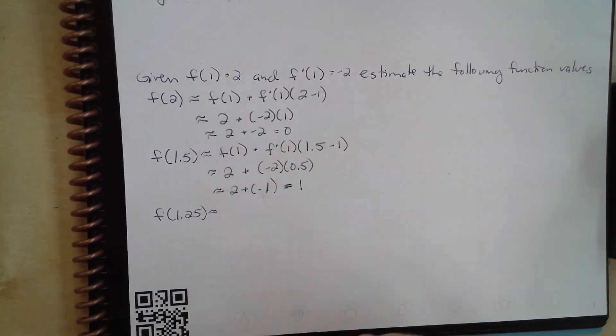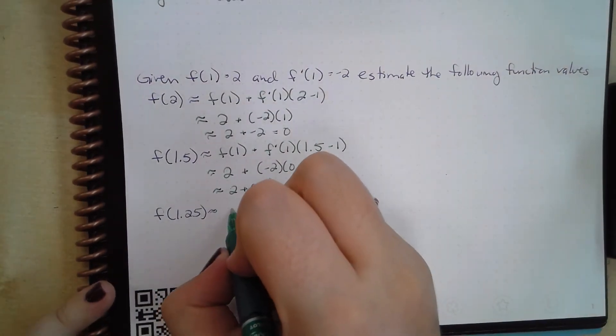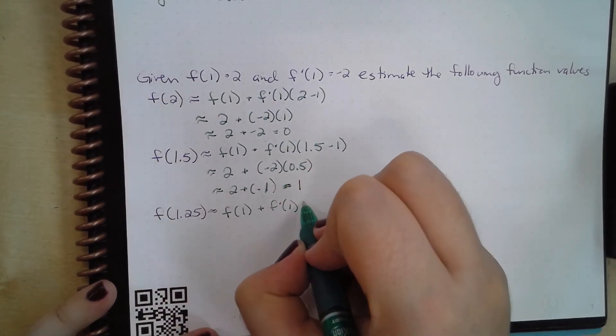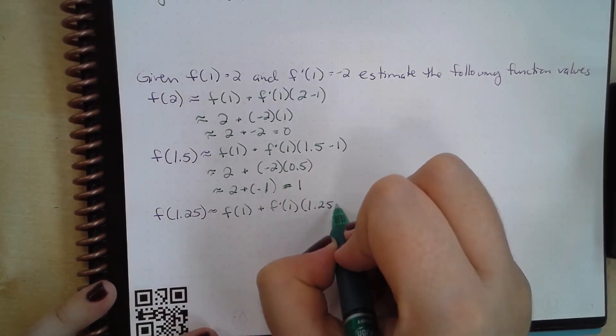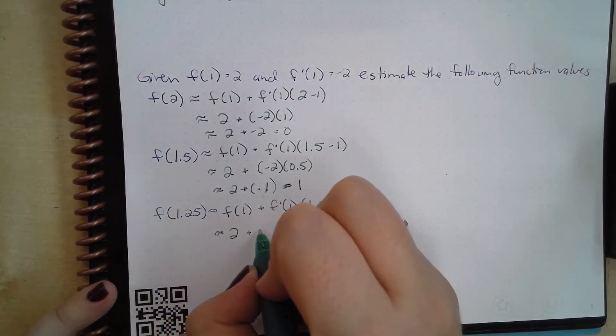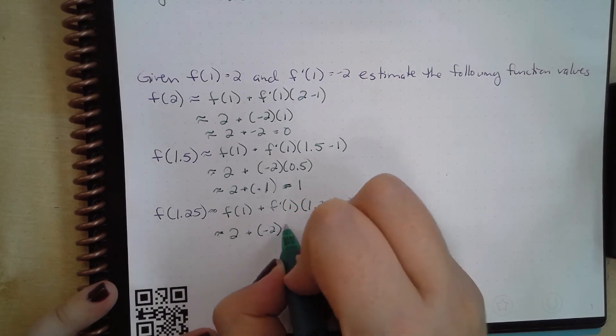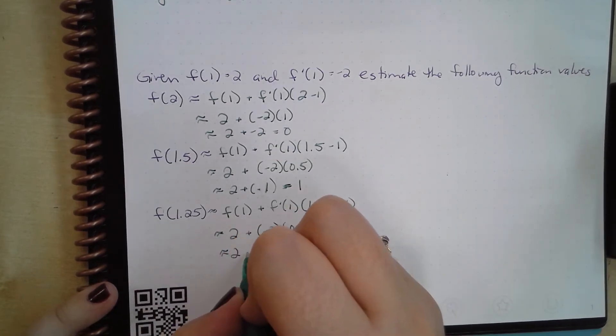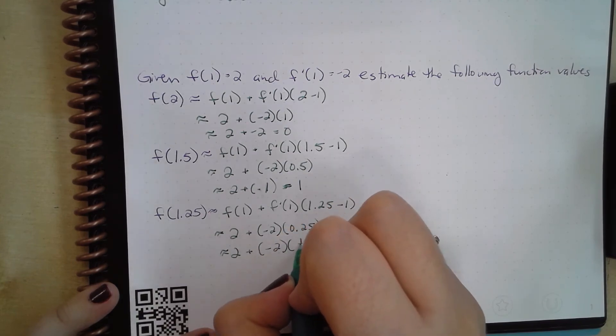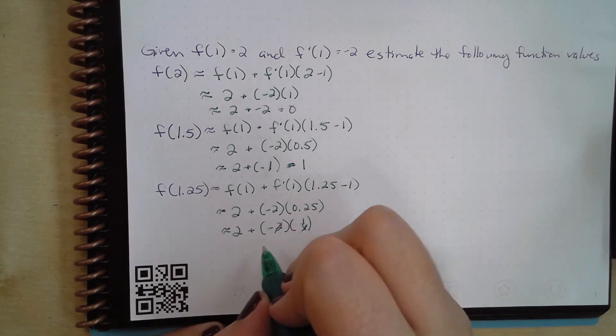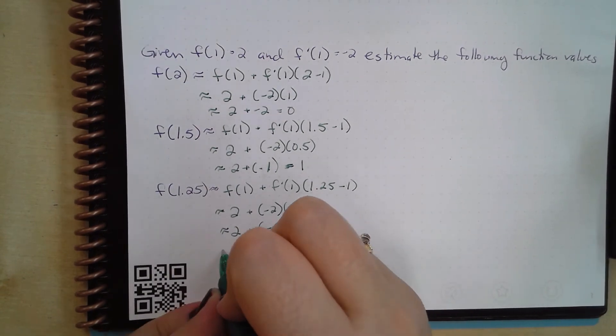And finally, we can do f(1.25). That's going to be f(1) plus f'(1) times (1.25 minus 1). So we have approximately 2 plus negative 2 times 0.25, or negative 2 times 1 fourth, which is negative 1 half. So 2 minus 1 half is 1 and 1 half.